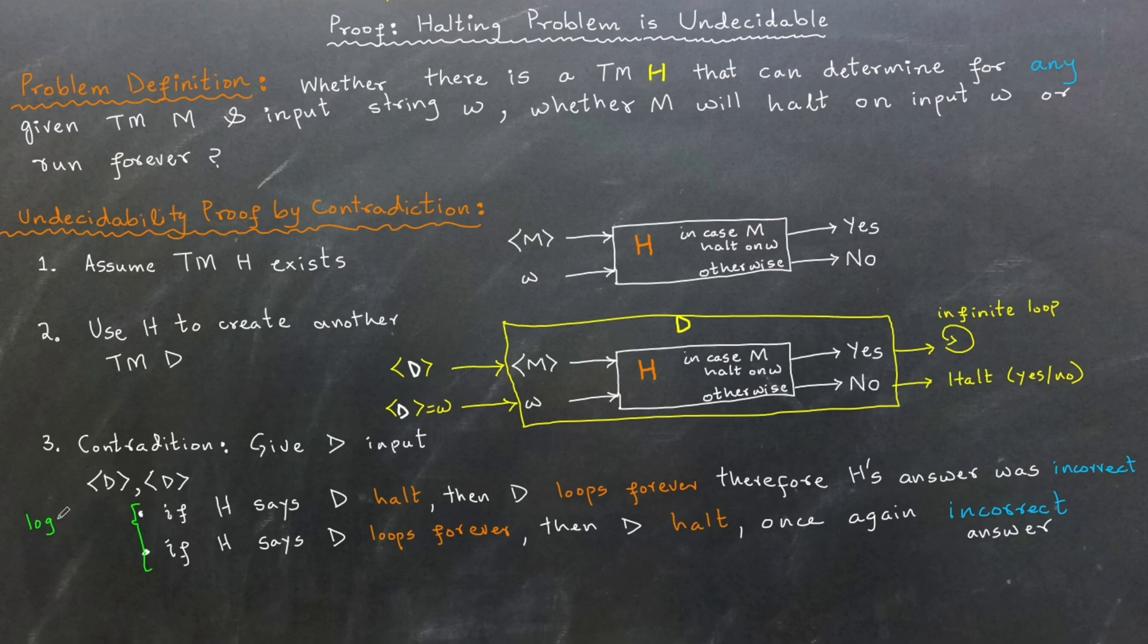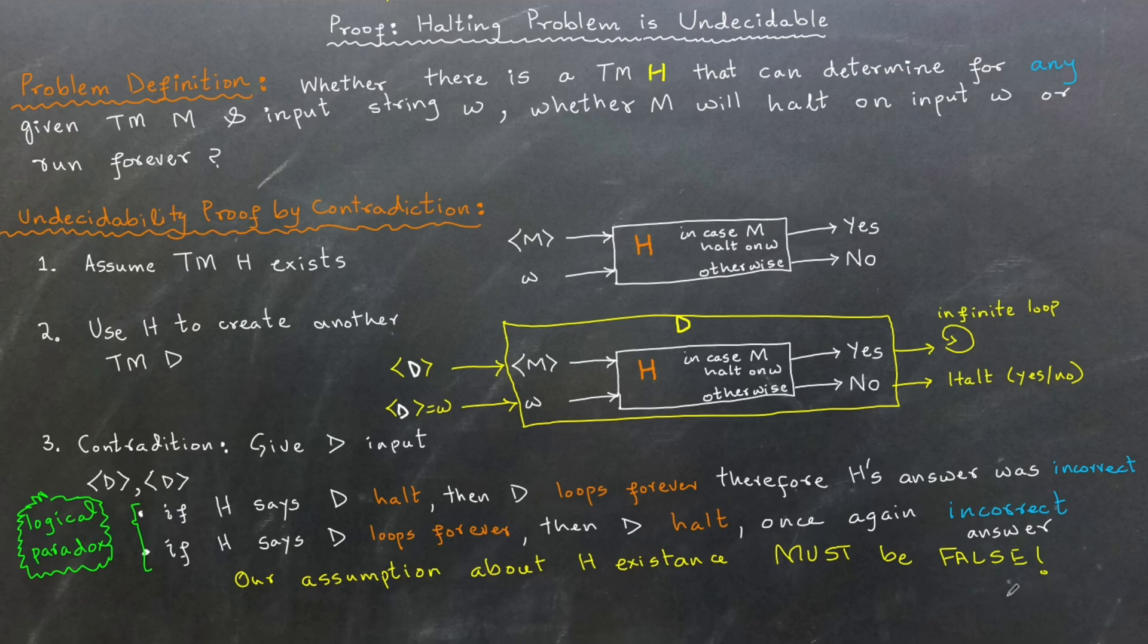This logical paradox means that our assumption about H's existence must be false. Therefore, no program can perfectly determine whether another program will halt in every case. This is why the halting problem is undecidable. This ends our proof.